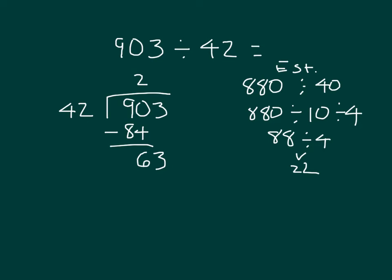63 with that 42 there only goes in once. 1 times 42 is 42, and 63 minus 42 is 21. So I'm left with 21 ones there.